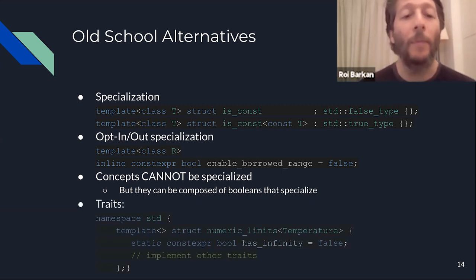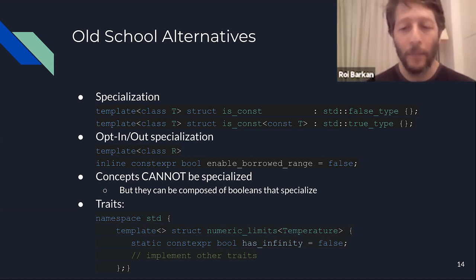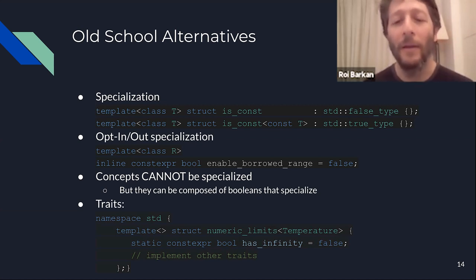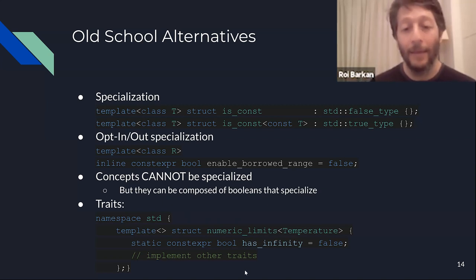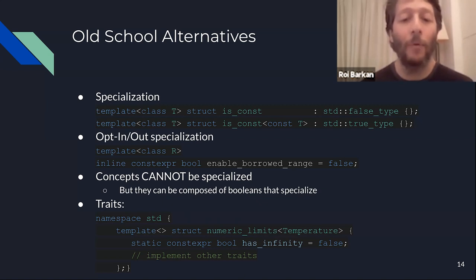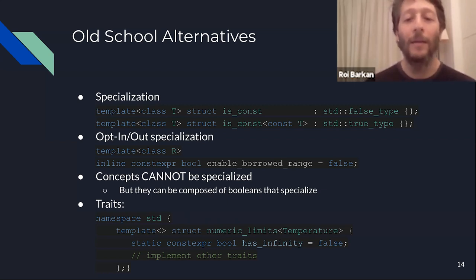Another way people used to convert types into Booleans was using traits and trait objects, mainly for grouping. For example, if I have a class called Temperature which is numeric, I can specialize and implement numeric_limits for my Temperature and define various Boolean and non-Boolean traits for my class. That was another way the standard library allowed us to configure attributes about our own types.